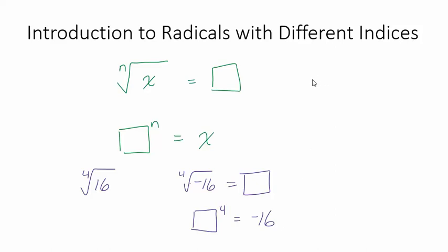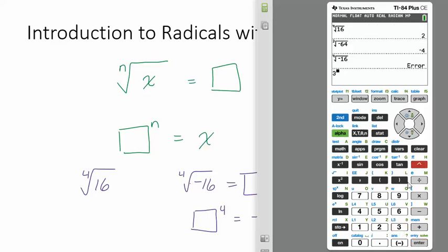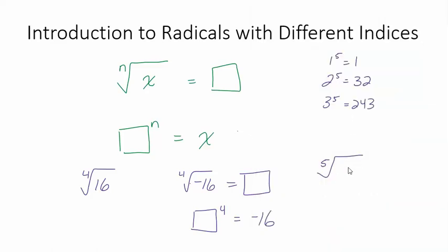Now if it was an odd index like 5, let's say I do the fifth root. Now I'm going to pick a number that's not nice, okay? That's not a perfect fifth. Let's write down the first few perfect fifths. One to the fifth power is 1. Two to the fifth, I think that's 32. Three to the fifth, I think that's 243. Let's check. Three to the fifth. 243. Okay. So let's say I put some number under this that's not a perfect fifth power, like a hundred. What's the fifth root of a hundred? Well, I know the answer is going to be somewhere in here. Somewhere between two and three. Two point something. Let's check it out.